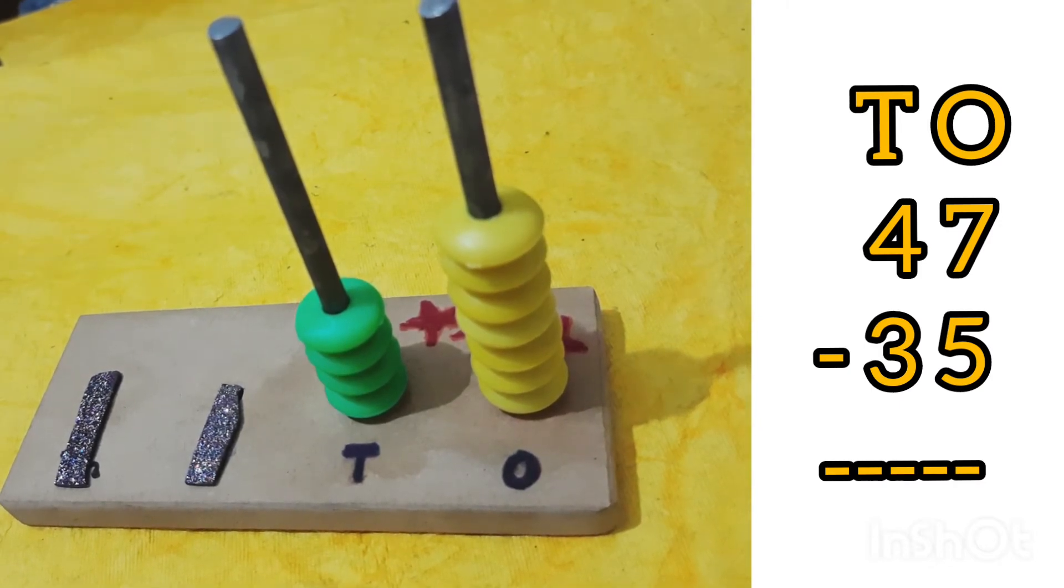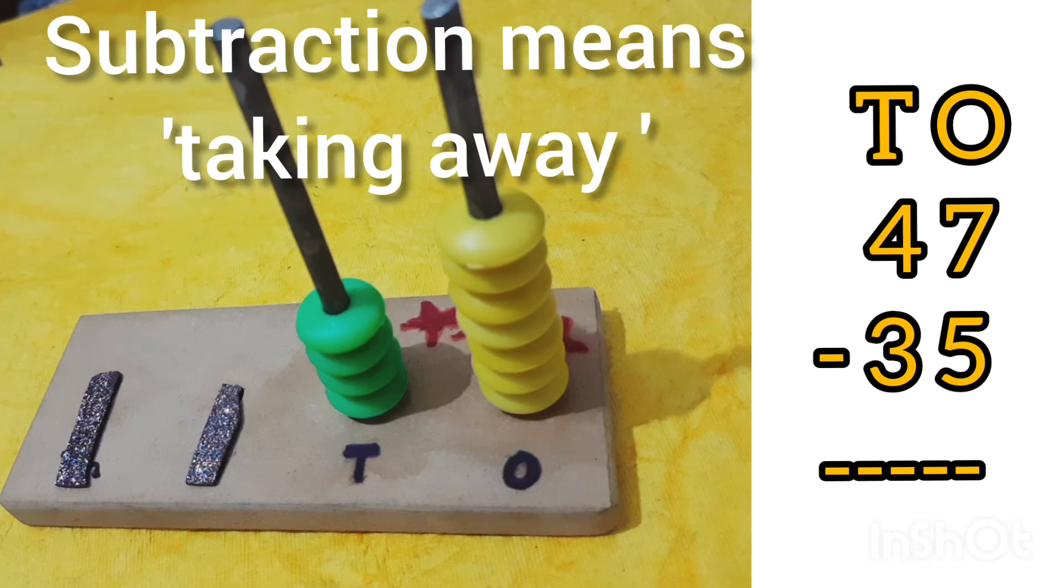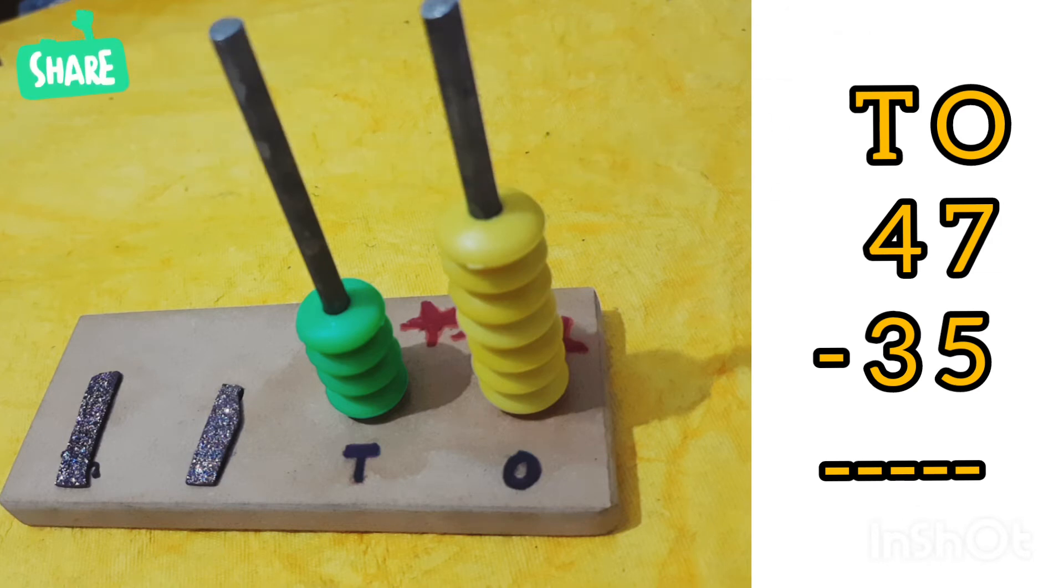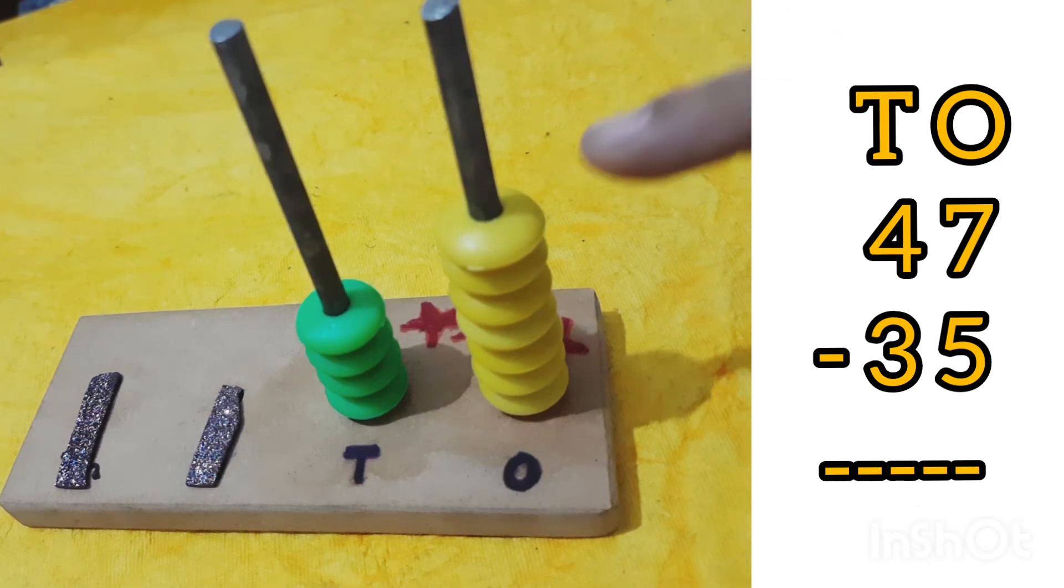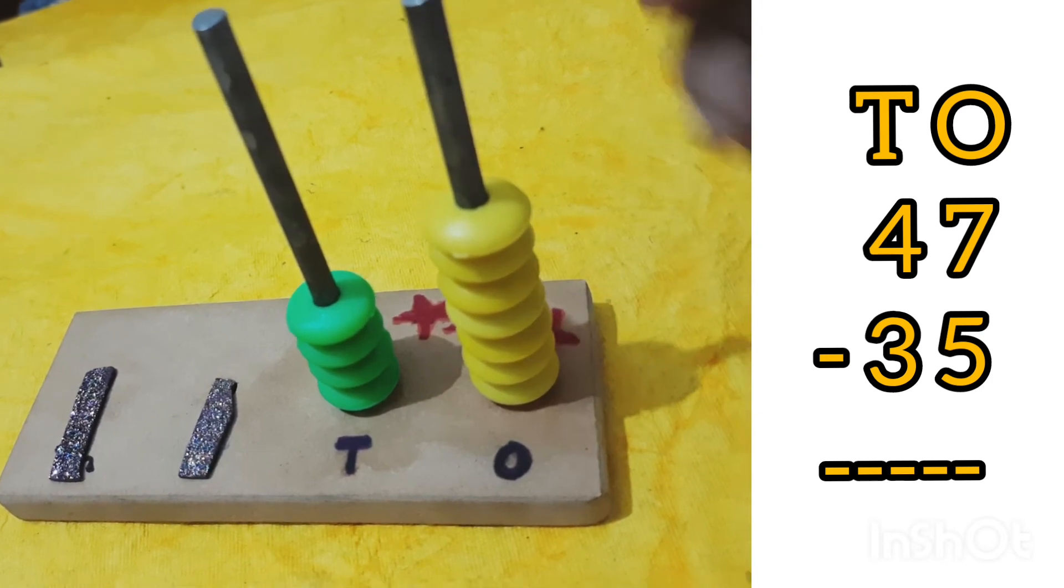This is 47 and we have to subtract 35 from it. Subtraction means taking away. In 35, 5 is at the ones place, so we have to remove 5 beads from the ones place.